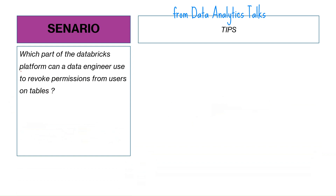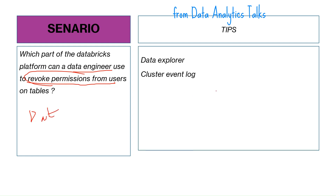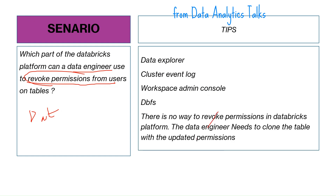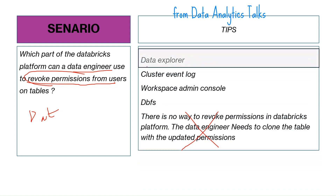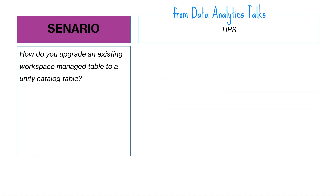Scenario seven: which part of the Databricks platform can a data engineer use to revoke permissions from a user on a table? The options include Data Explorer, cluster event log, workspace admin console, and DBFS. The correct answer is the Data Explorer — there is a way to revoke permissions, and it is done through the Data Explorer.